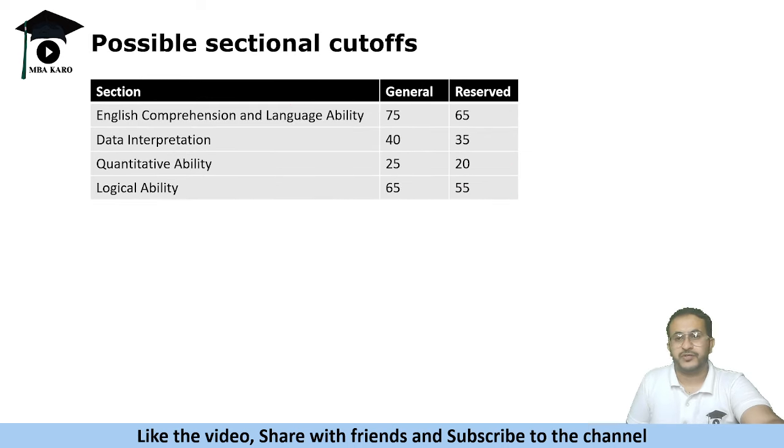If sectional cutoffs are involved, what could be the possible sectional cutoffs? I think they might give general category, reserved category, or they might give each category separate. Not sure, but generally it happens they give general, reserved.